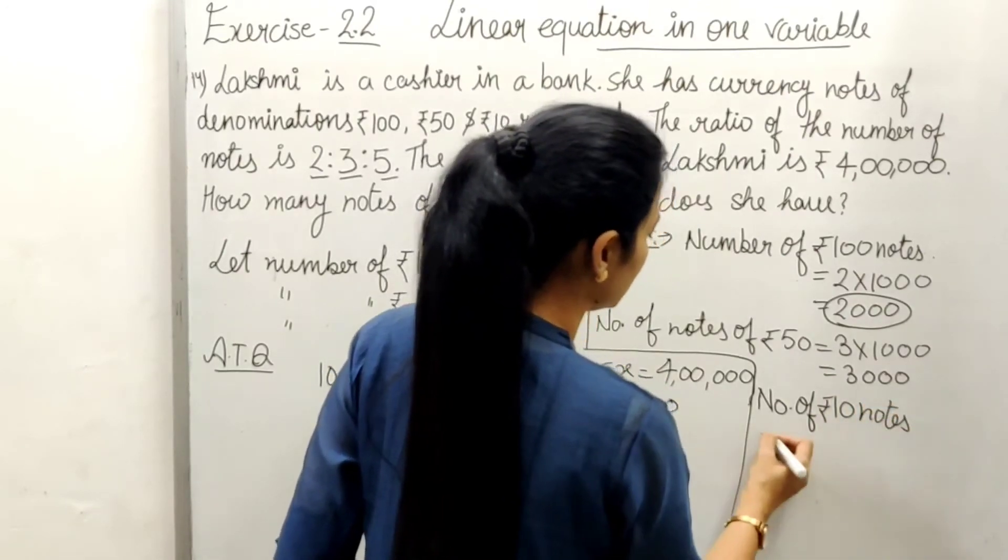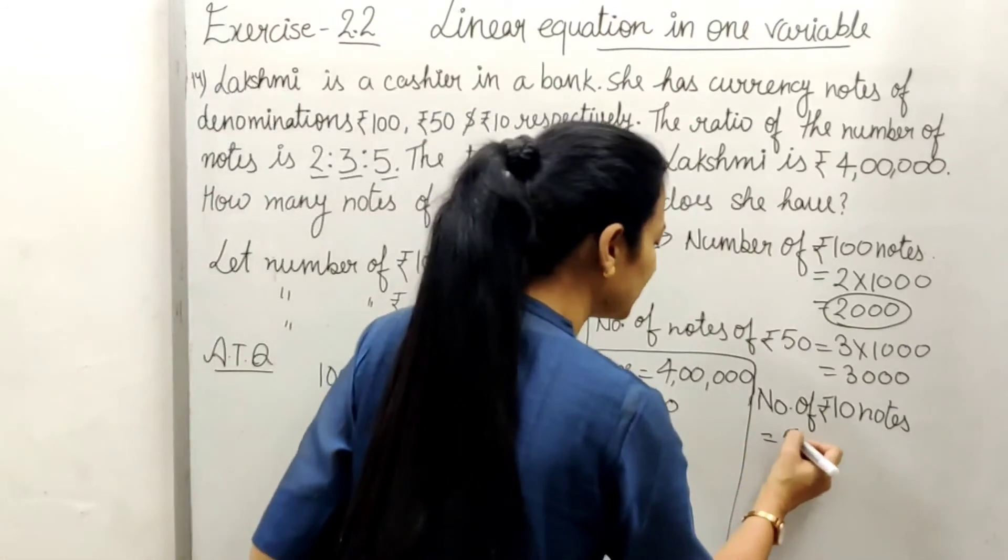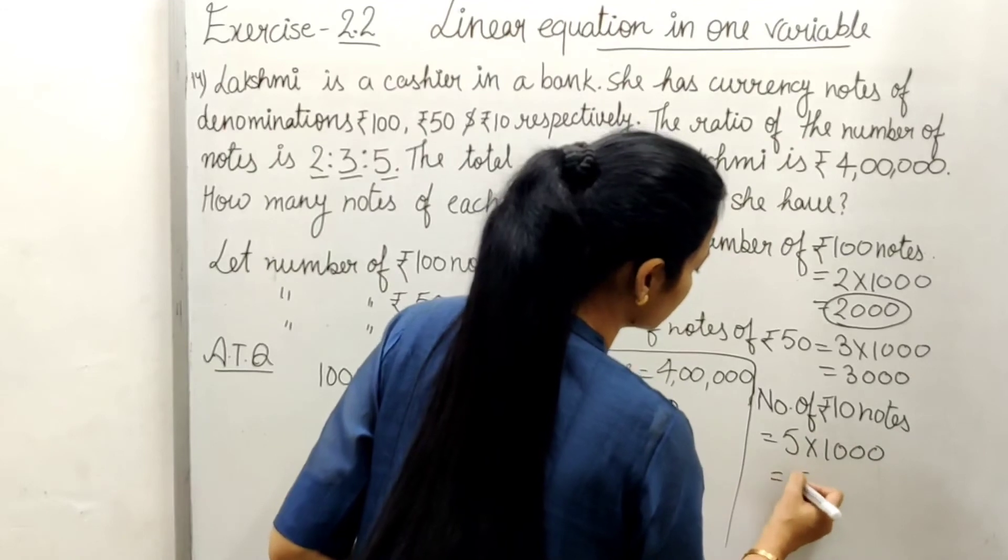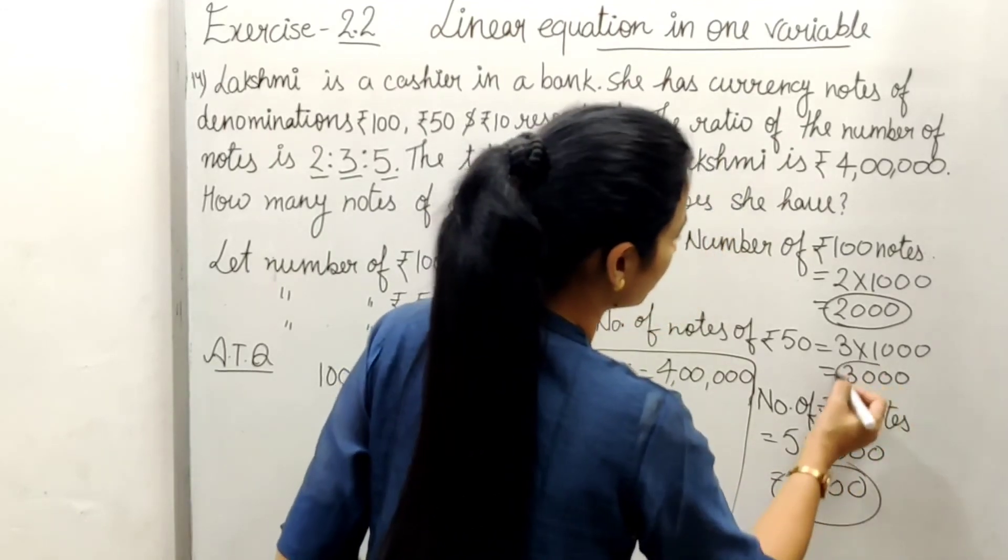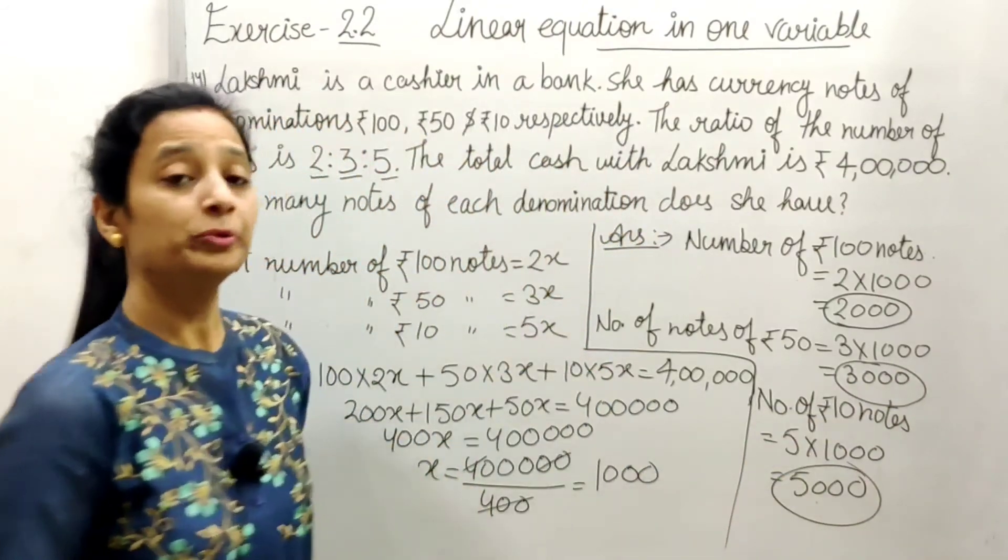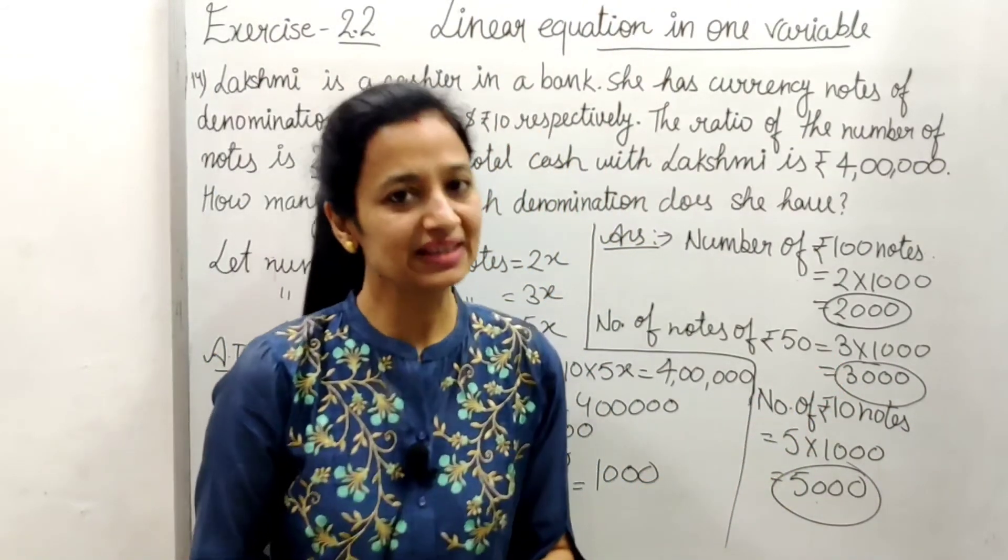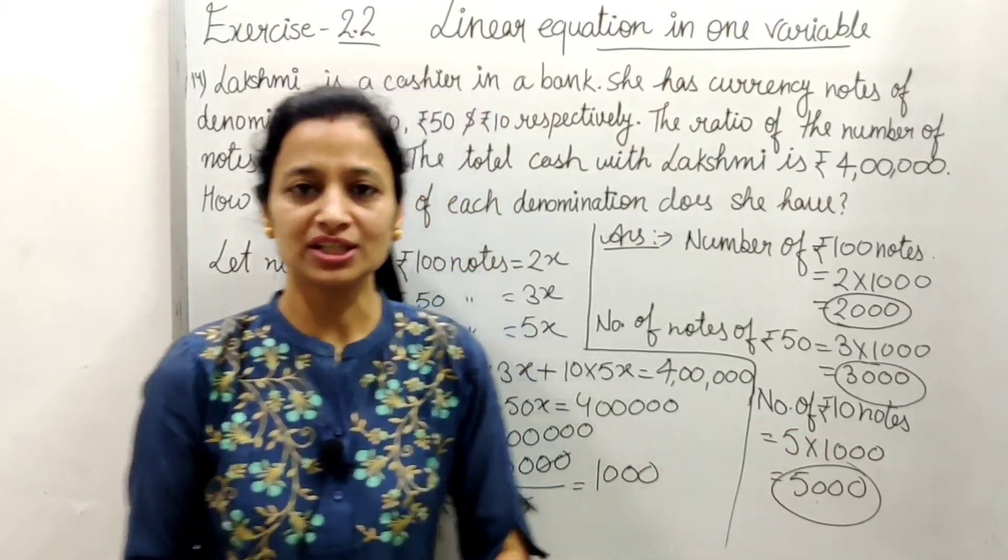And the number of ₹10 notes equals 5x, so it will be 5 times 1000, that is 5000. So ₹100 notes are 2000, ₹50 notes are 3000, and ₹10 notes are 5000.